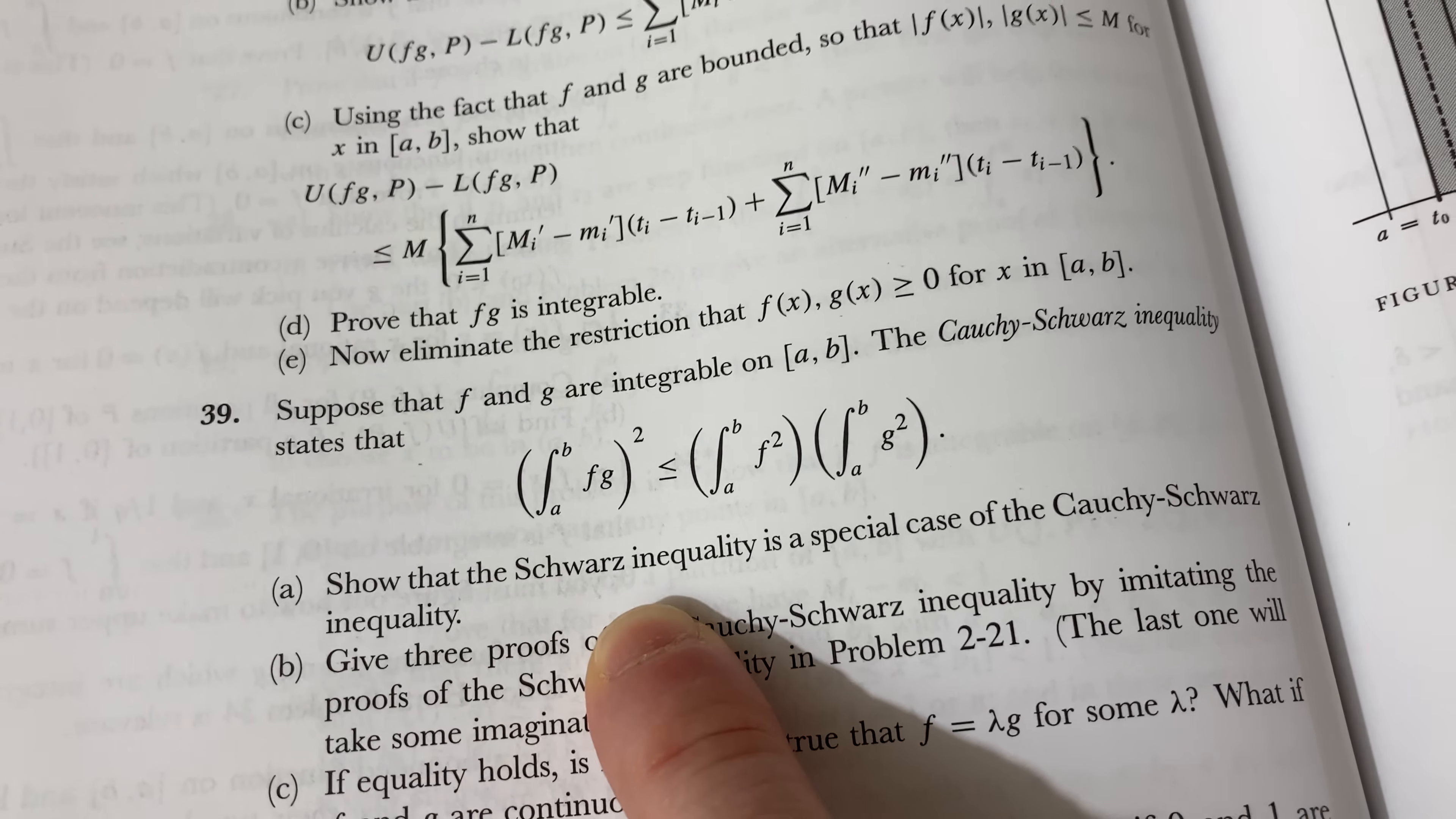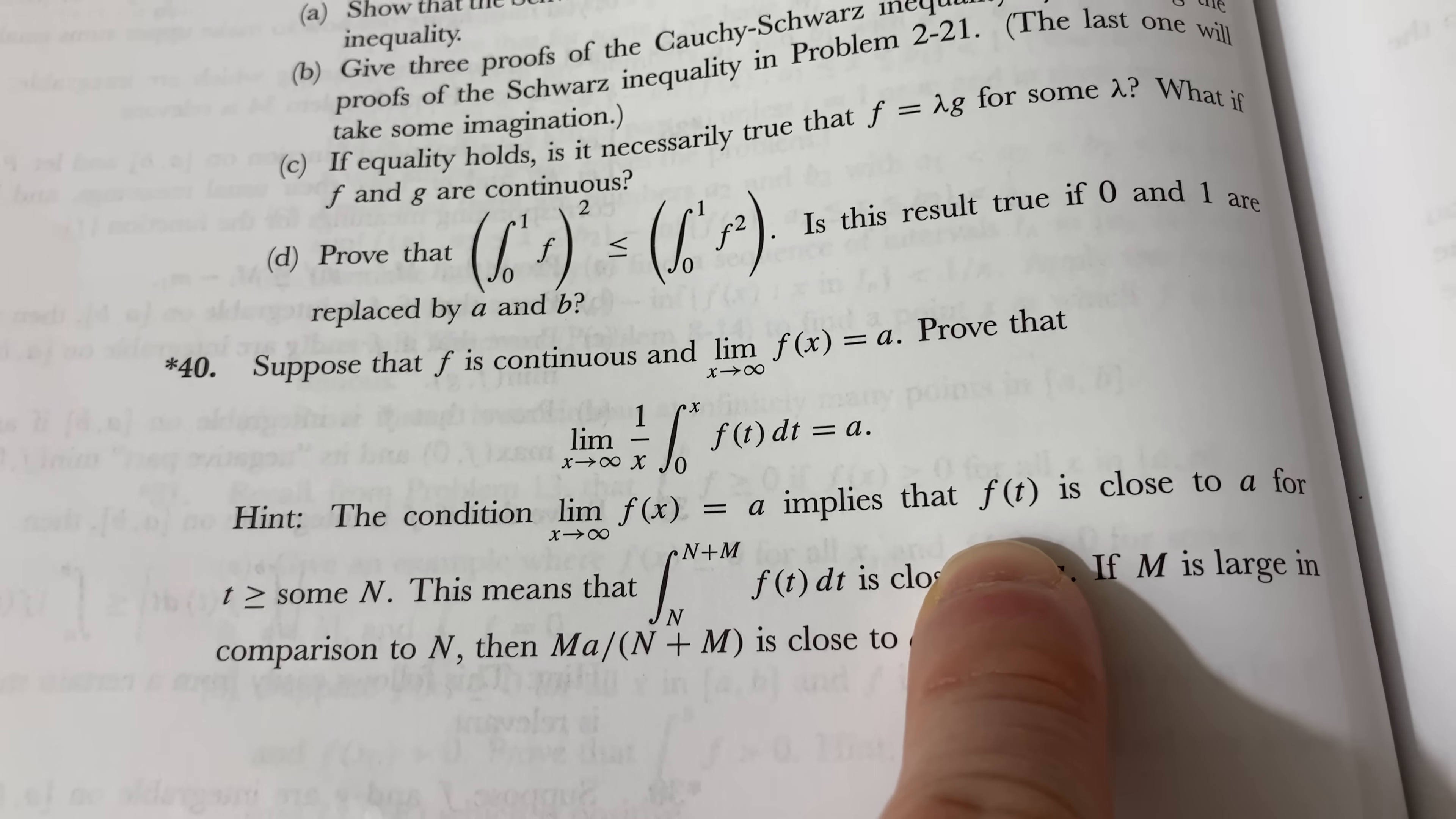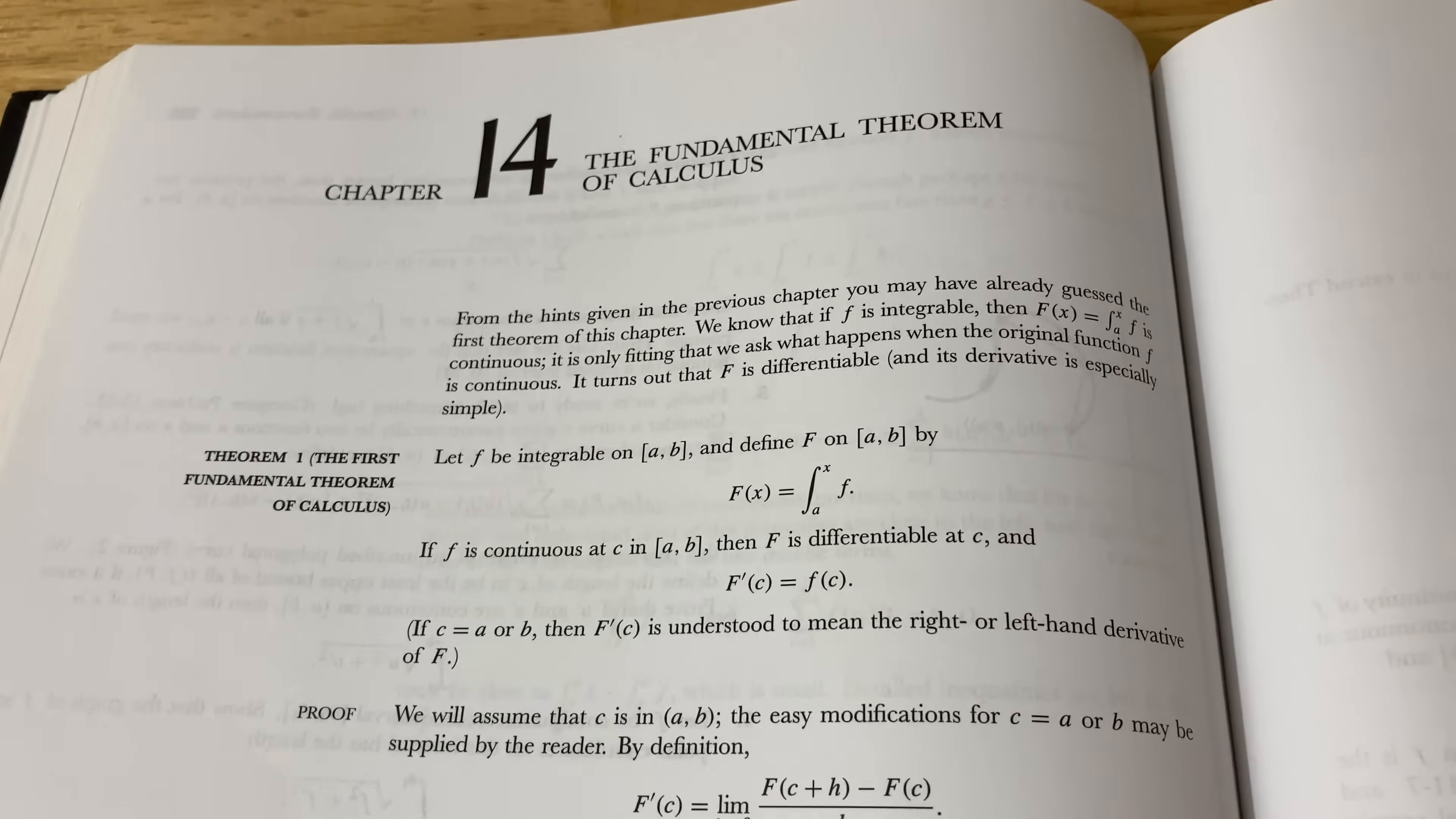What's this one here? Suppose that f has got a star. f is continuous and the limit of f of x as x approaches infinity is a. Prove that this limit is equal to a. Hint. This condition here implies that f of t is close to a for t greater than or equal to some n. This means that. This is a close term. So, it gives you a hint. It gives you a pretty generous hint here. And without the hint, if you don't have some experience, it'd be pretty tough. So, and it's a starred problem, right? It's meant to be hard.